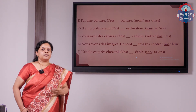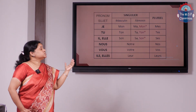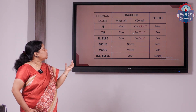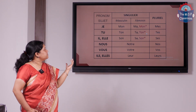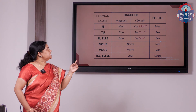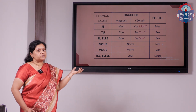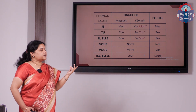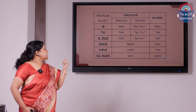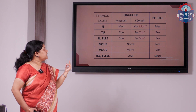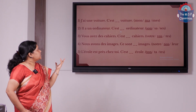Let us go through what we have learnt. We were learning about possessive adjectives. We have mon, ma, mes — masculine singular, feminine singular, and plural. Then ton, ta, tes — masculine singular, feminine singular, and plural. Then son, sa, ses — meaning his or her, for masculine singular, feminine singular, and plural. Then notre and nos — our, singular and plural. Then leur and leurs — both are pronounced the same even though leurs has an S; both mean their, singular and plural. We also saw the special rule and the exercises. Hope you are clear.